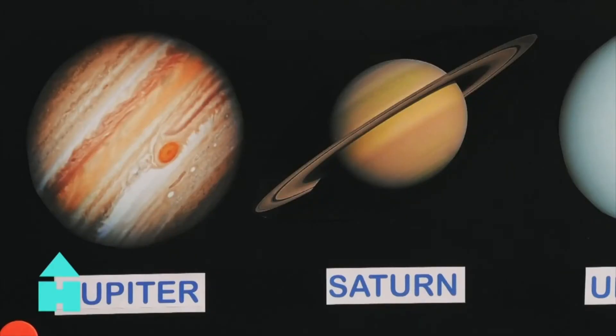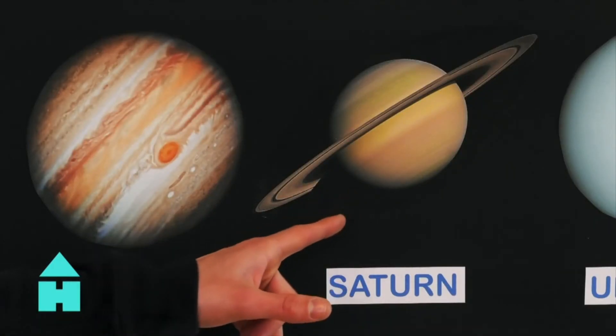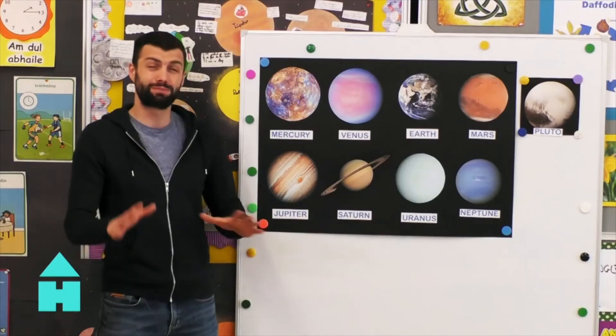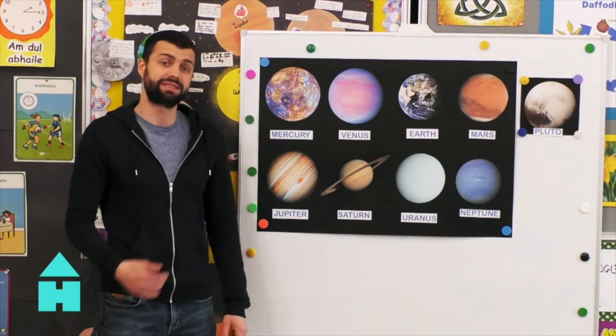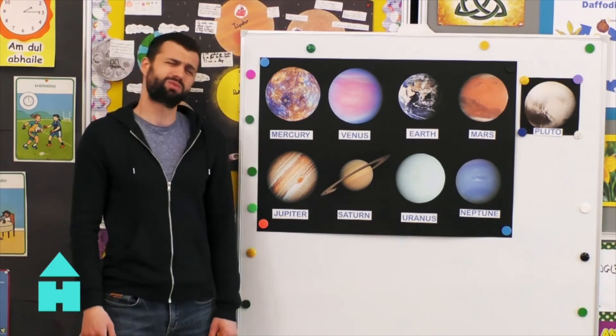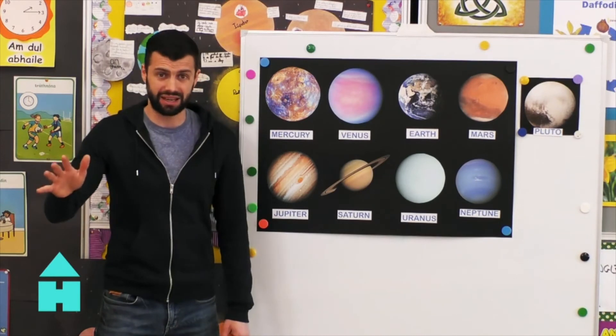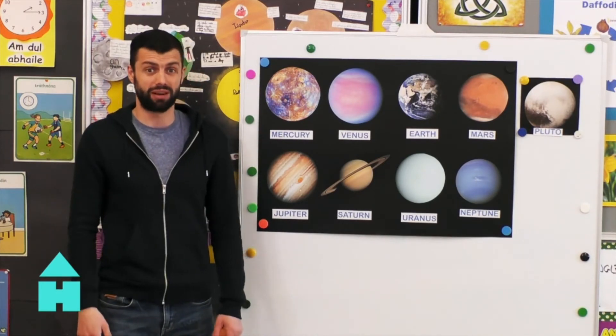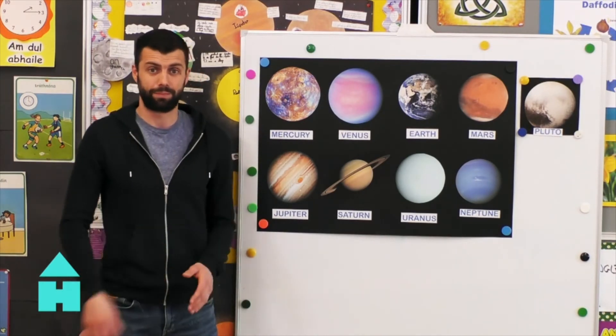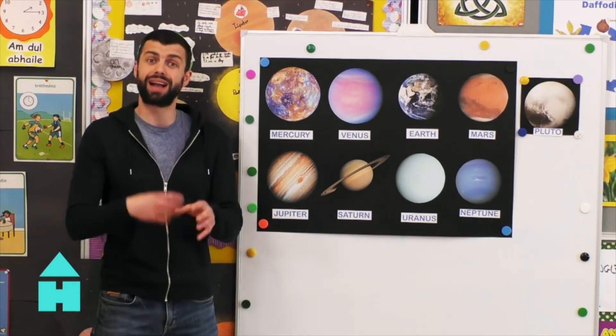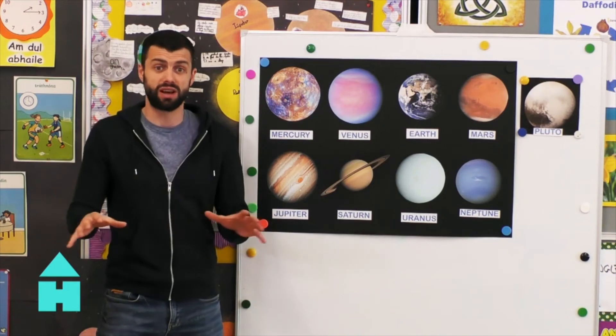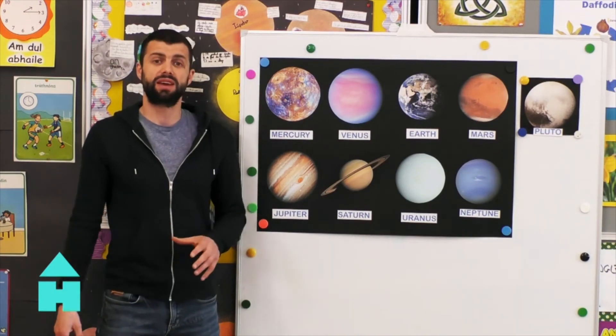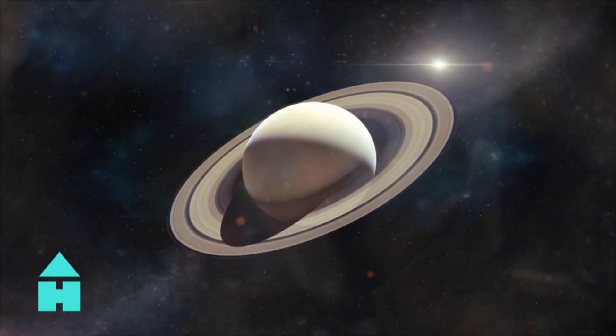Next in our solar system we have a planet called Saturn. Saturn looks pretty cool. It's the second largest planet in our solar system. It's the sixth planet from the sun, and it's 1.2 billion kilometers away from Earth. That's a lot of running. Saturn is also a gas giant. It's an enormous ball of gas with no solid surface. It's famous for its seven beautiful rings. You can kind of see them here.